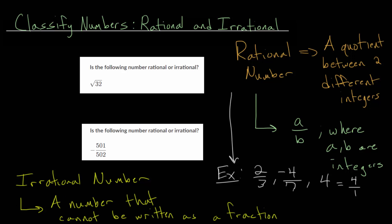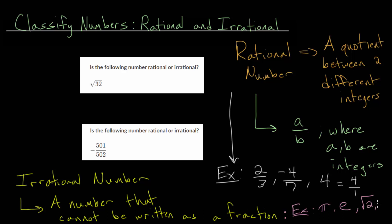With irrational numbers, these are quite a bit trickier, but we can look at some different examples. For instance, a number like pi — the circle number, that 3.14159 — cannot be written as a fraction. Another famous mathematical constant is the number e, which shows up with exponential functions or logarithms. More common numbers include the square root of 2, the square root of 3 — but not the square root of 4, because the square root of 4 is just equal to 2.